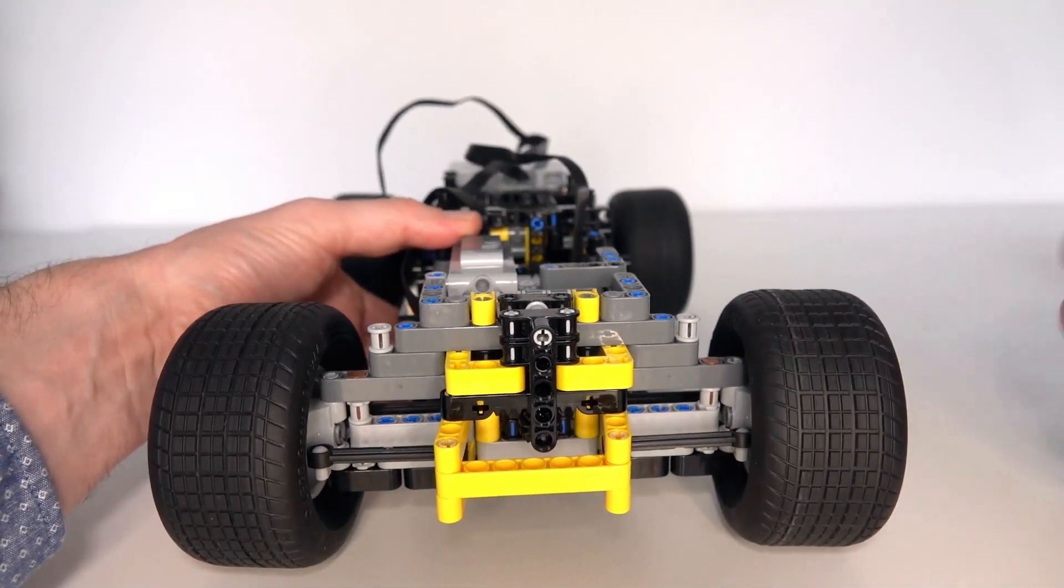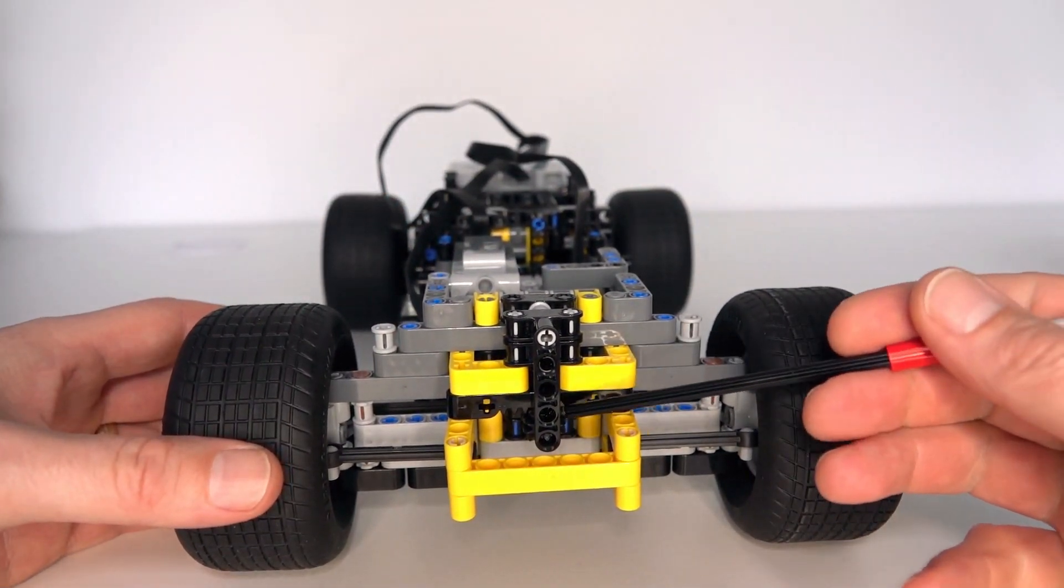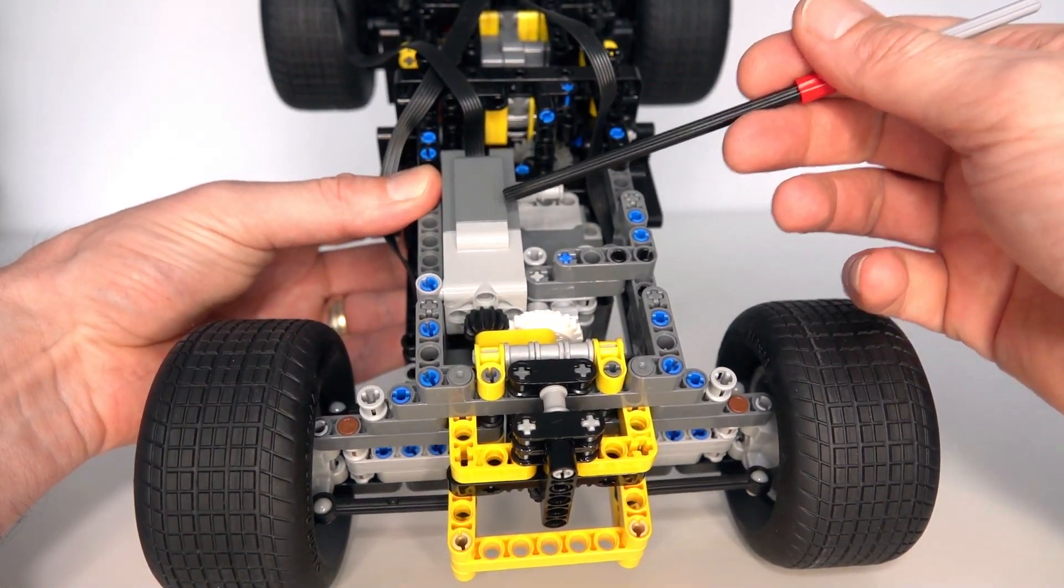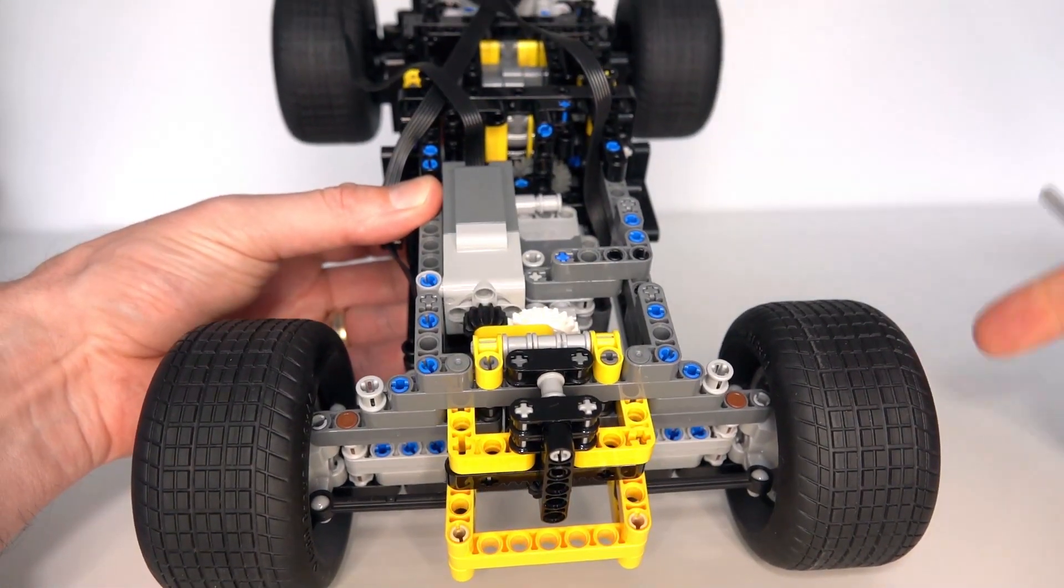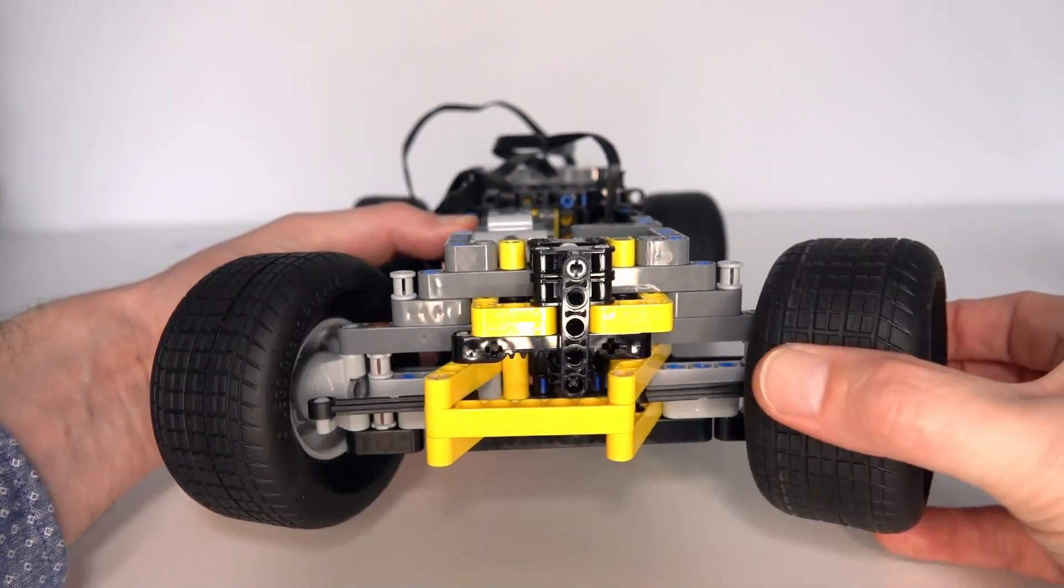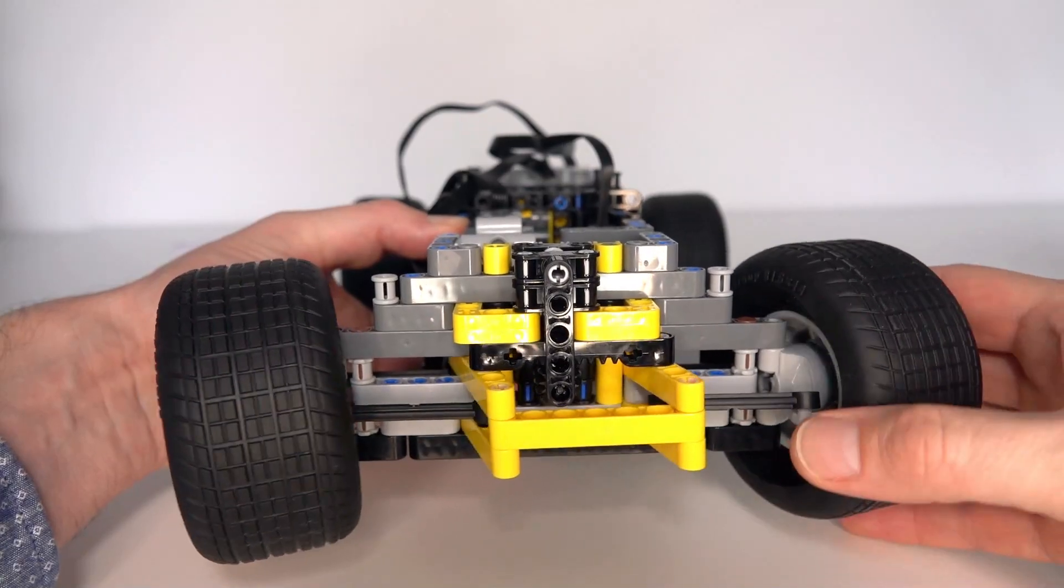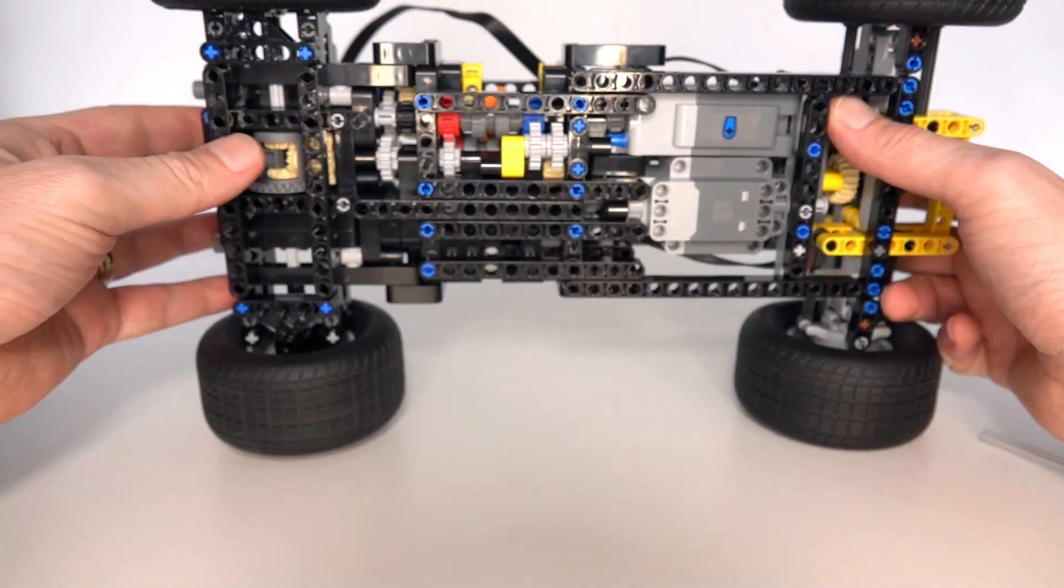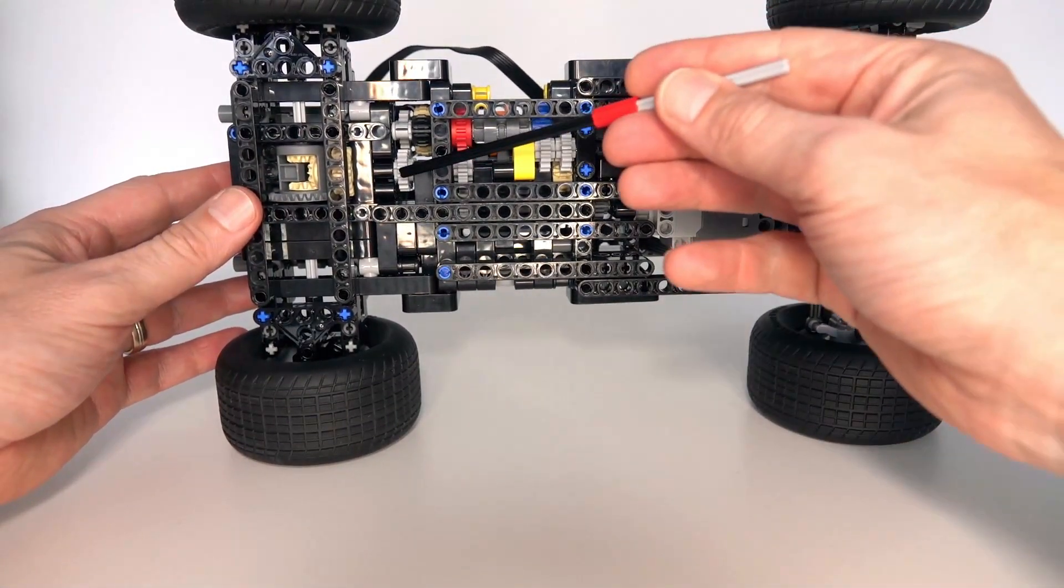I've created a steering system using a gear rack driven by that large powered up motor at the front. It's driven through a white clutch gear so you can't oversteer—it will slip once you reach the limits of the steering system. Underneath I've simply connected the output of the gearbox over here.